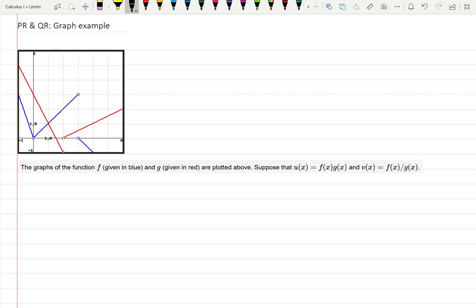As you can see, we are working with two functions u of x and v of x, where u of x is given as a product of f of x and g of x, and v of x is the quotient of f of x and g of x, where f is given in blue and g is given in red, which is actually not a very good idea for the example, because what if a person who is reading this example is colorblind? Not a very good choice.